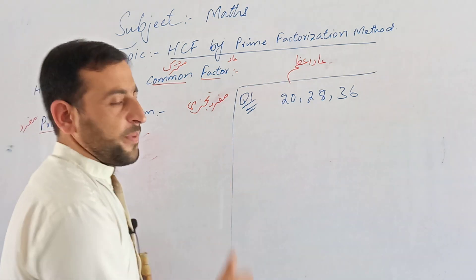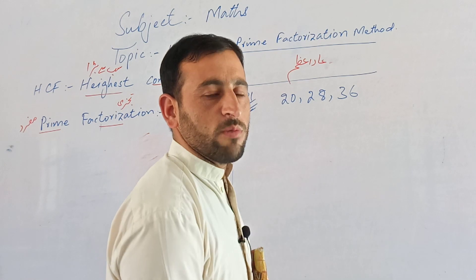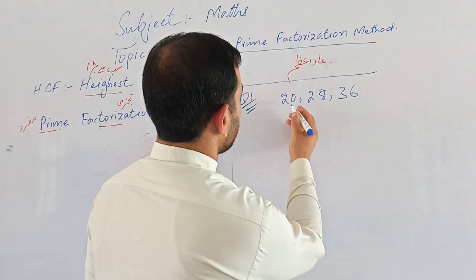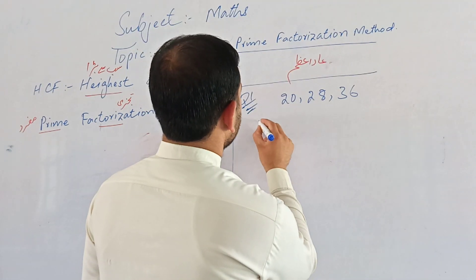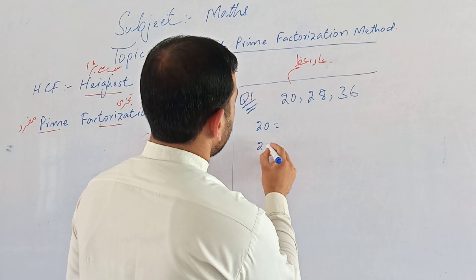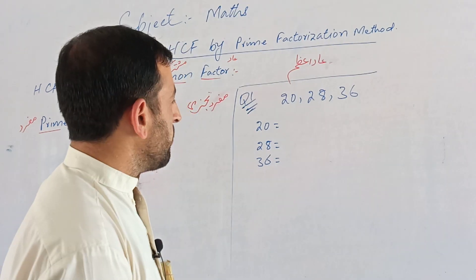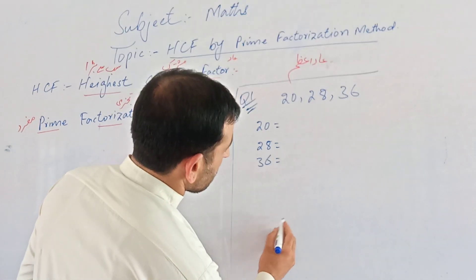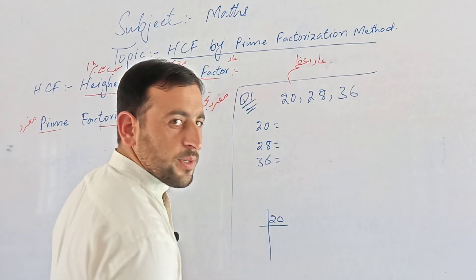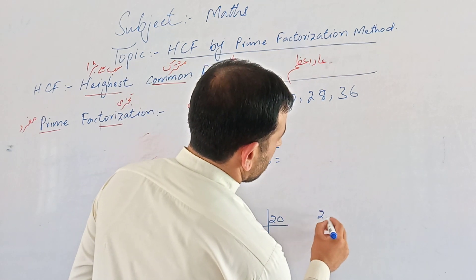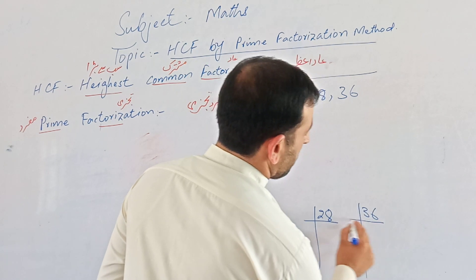Let's look at a question. We are given three numbers: 20, 28, and 36. We need to find: 20 equals its prime factorization, 28 equals its prime factorization, and 36 equals its prime factorization.